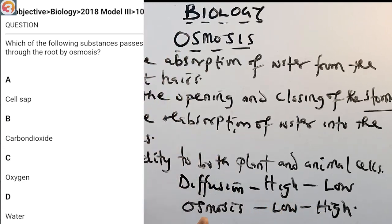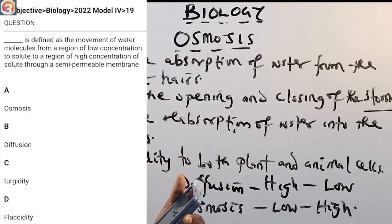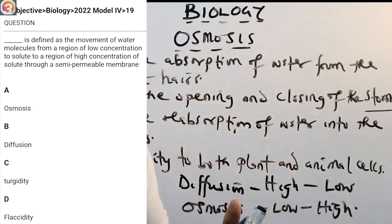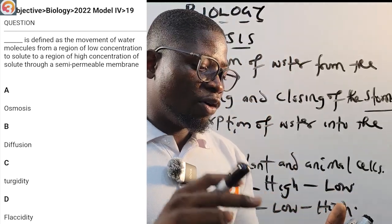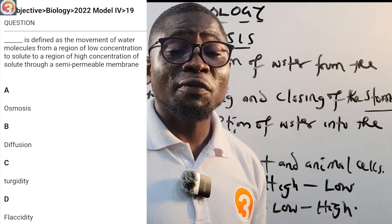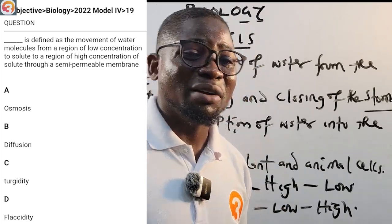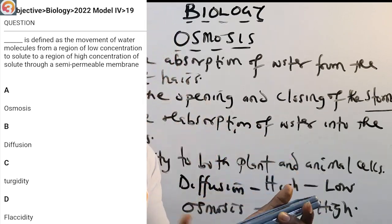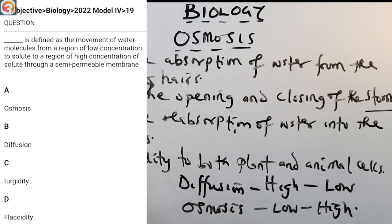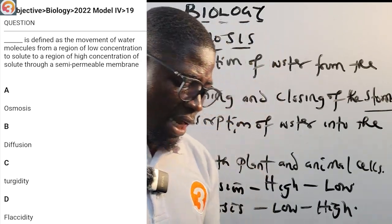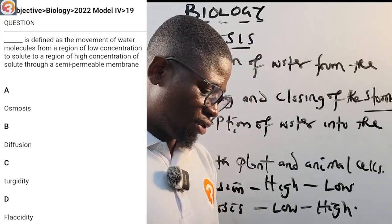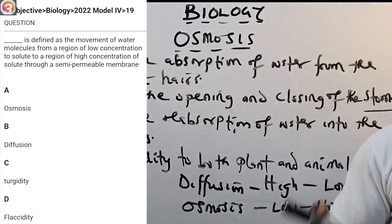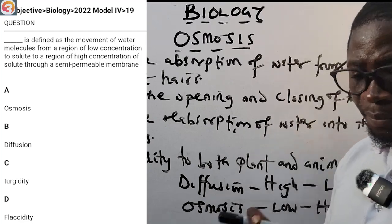2022 question number 19: dash is defined as the movement of water molecules from a region of low concentration of solute to a region of high concentration of solute through a semi-permeable membrane. Options: A, osmosis; B, diffusion; C, turgidity; D, flaccidity. The answer is A — osmosis. Note that some say they don't repeat past questions, but this 2022 question and the 2023 question are essentially the same concept — they just changed the format.